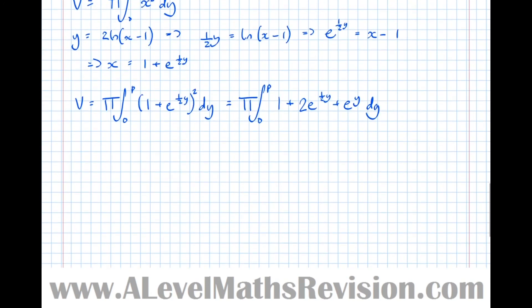And now we're ready to integrate. So that's equal to pi times, and remember, you mustn't forget to write the pi at the front. So integrating this, I get y plus, and 2e to the half y integrates to itself, but I need to divide by the differential of the power. So that becomes 4e to the half y. And e to the y integrates to itself to just become, again, e to the y between p and 0.